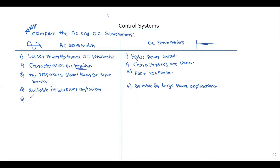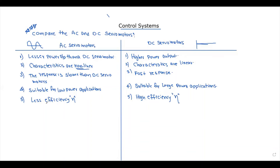Next point: AC servomotors have less efficiency, denoted with eta (η). DC servomotors have high efficiency, also denoted with eta (η) — high efficiency.